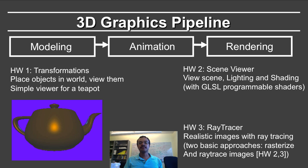In this course, we will have assignments that cover the modeling and rendering parts of the graphics pipeline to give you a basic understanding of computer graphics. We will not have time to go into animation in detail — we hope a future course will deal with that. The first assignment deals with transformations, and the goal is to place objects in the world and view them. You will write a simple viewer that views a teapot placed at the center of the screen and move around it to create images.